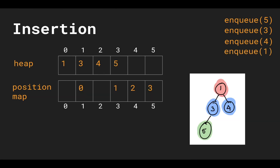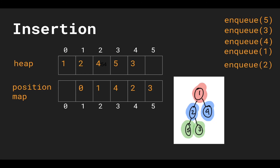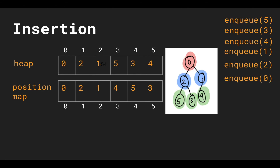If we enqueue 1, it's going to swim up to the root of the tree, and the position map is updated after the swaps. And when we enqueue 2, it's going to do some swimming up as well, and the position map is updated accordingly. You can verify that this is correct. Lastly, when we enqueue 0, it's going to swim all the way up because it's the smallest element of the heap, and our position map looks like this.